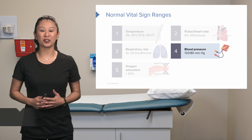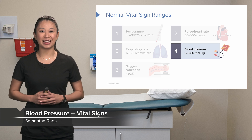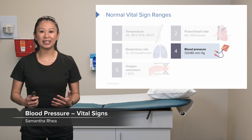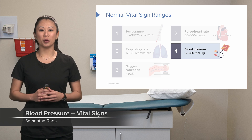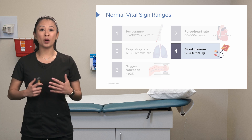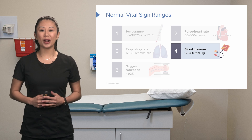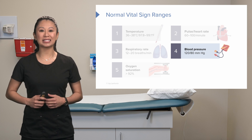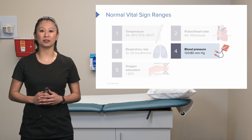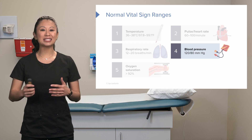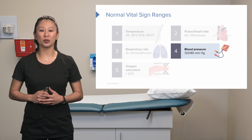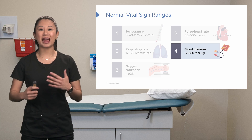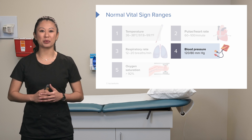Welcome to Blood Pressure in our Vital Signs series. Taking a look at our normal range, 120 over 80 millimeters of mercury is considered a normal blood pressure. Let's take a deeper look at blood pressure and how we get those numbers.